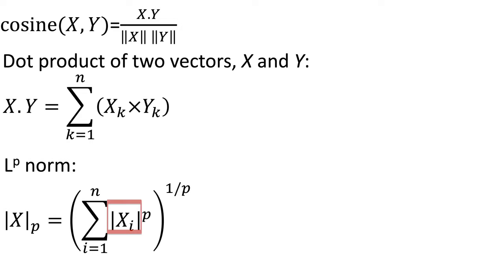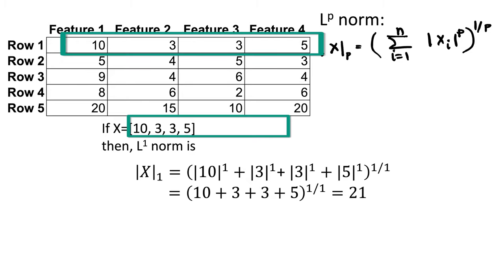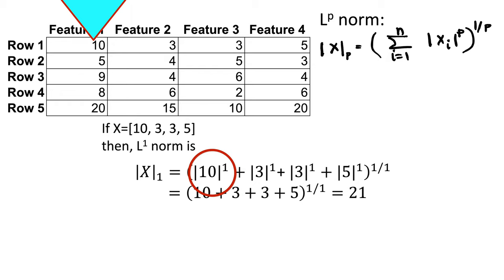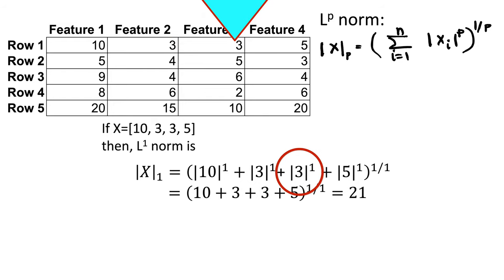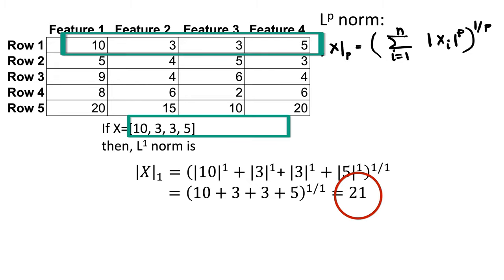Take the p-th power of the absolute value in each dimension, sum them up, and then take the 1-over-p power of that summation. If you have the vector [10, 3, 3, 5], then the L1 norm is |10|^1 + |3|^1 + |3|^1 + |5|^1, which results in 10 + 3 + 3 + 5 = 21. Taking the power of 1/1 does not change the value, so the L1 norm is 21.